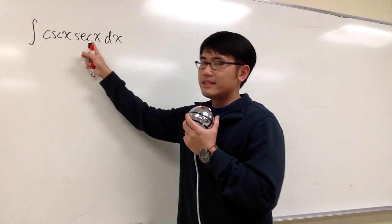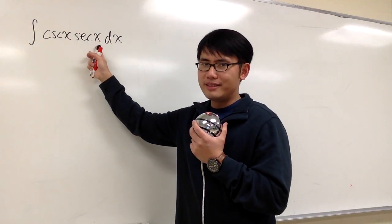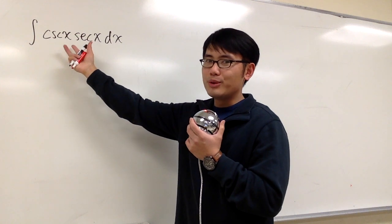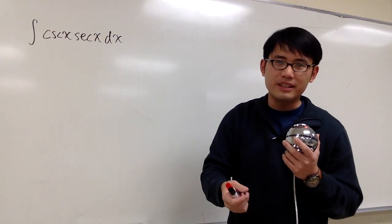Okay, that's the integral cosecant x times secant x. How can we do this? We're not really sure about how to integrate this, right? Secant x times cosecant x.